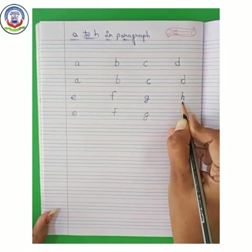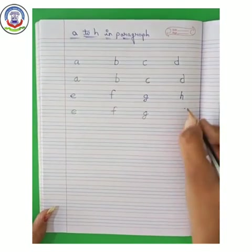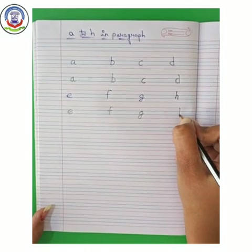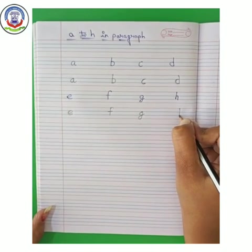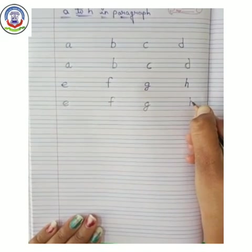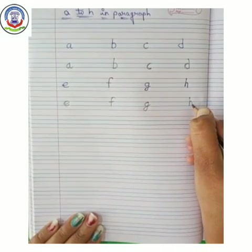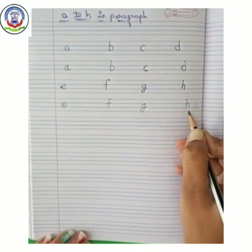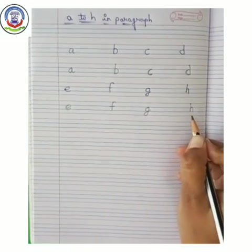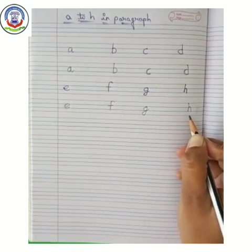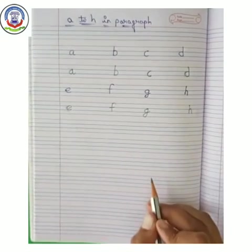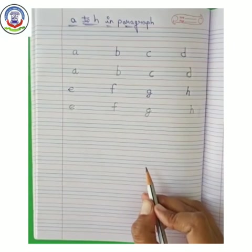Next letter — H. Make a standing line from red line to blue line. Now, turn it on the left side like this. H. H says ha — Horse. Now, kids, you have to practice the same in your notebook. Bye-bye.